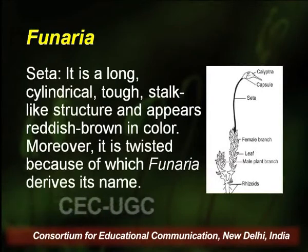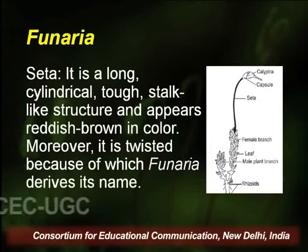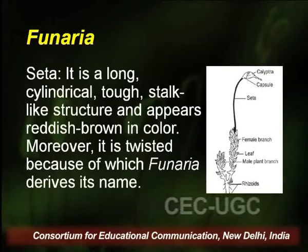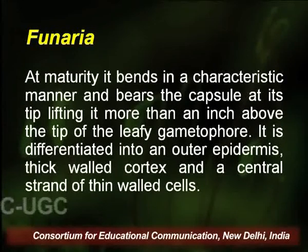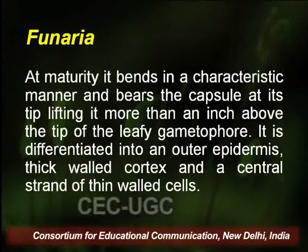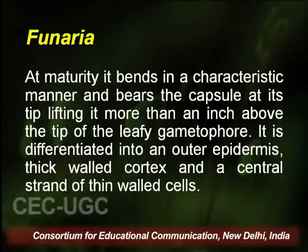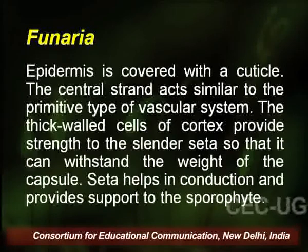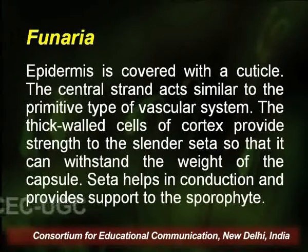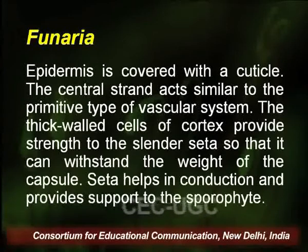The seta is a long cylindrical tough stalk-like structure that appears reddish-brown in colour when dry and mature. It is twisted, because of which Funaria derives its name. At maturity, the seta bends in a characteristic manner and bears the capsule at its tip, lifting it more than an inch above the tip of the leafy gametophyte. It is differentiated into an outer epidermis surrounding a thick-walled cortex and a central strand of thin-walled cells. The epidermis is covered with a cuticle. The central strand acts similar to a primitive type of vascular system, and the thick-walled cells of the cortex provide strength to the slender seta. Seta helps in conduction and provides support to the sporophyte.